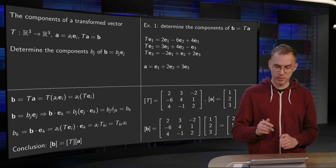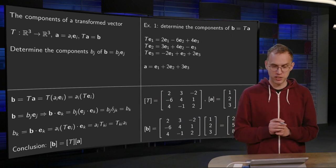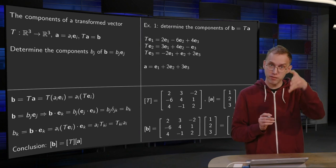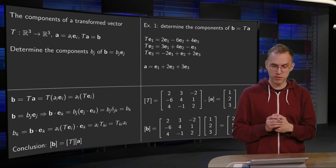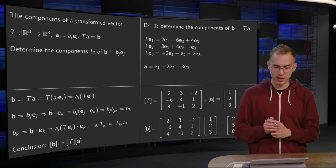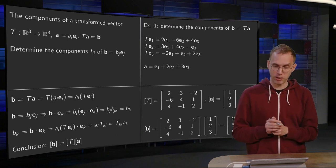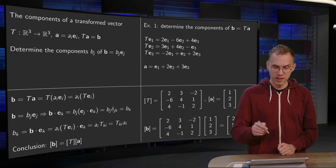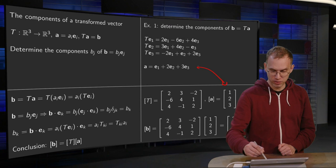So first of all, you determine the matrix of T. Well that's straightforward, the T of E1 in the first column, 2 minus 6 plus 4, T of E2 in the second column, 3, 4 minus 1, 1, and T of E3 in the third column, minus 2, 1, 2. And then our A is over here, 1, 2, 3.